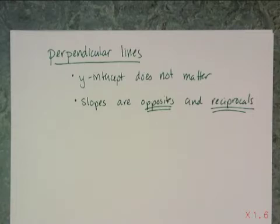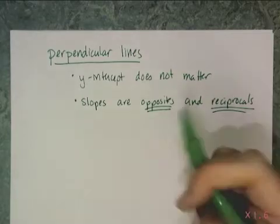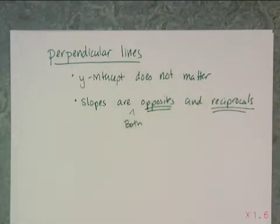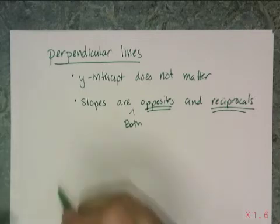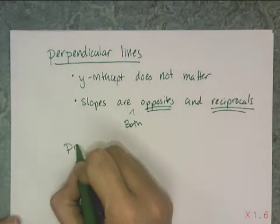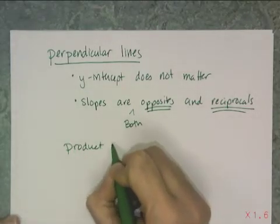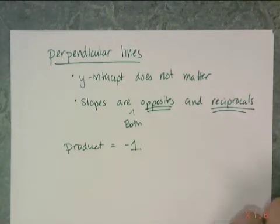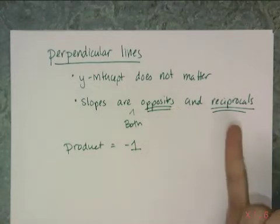What's important about perpendicular lines is that their slopes are both opposite and reciprocals, not either or. This is both. You have to have the opposite sign to make sure they go in opposite directions, and you need them to be reciprocals to square them off. The thing you need to remember about the slope of perpendicular lines is that their product is negative 1, and the only way to get that is that they are both opposites and reciprocals.